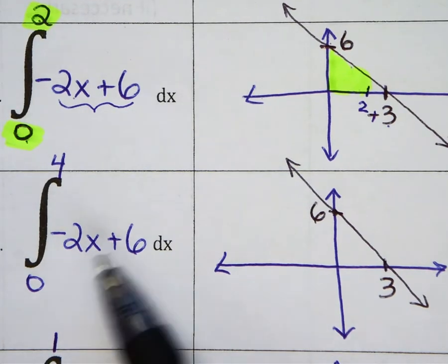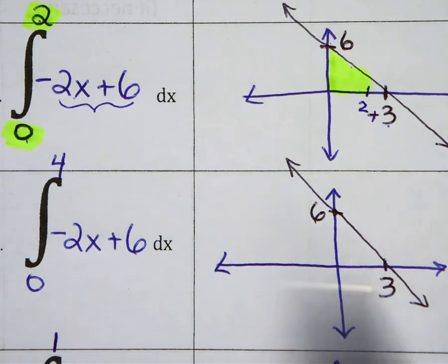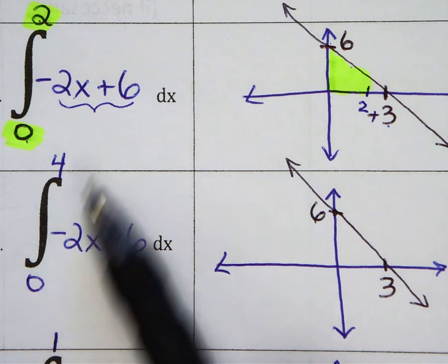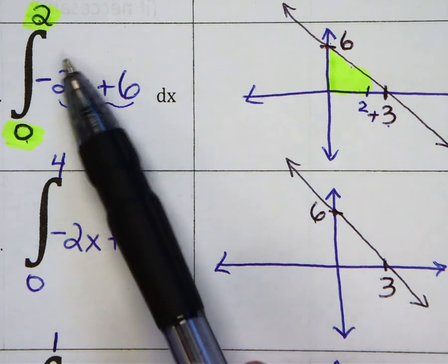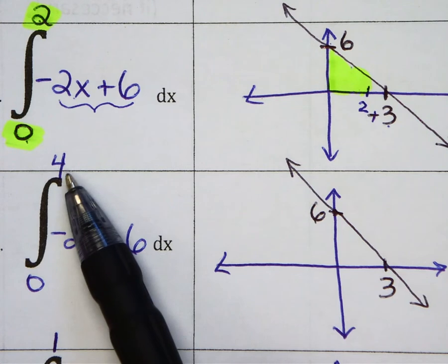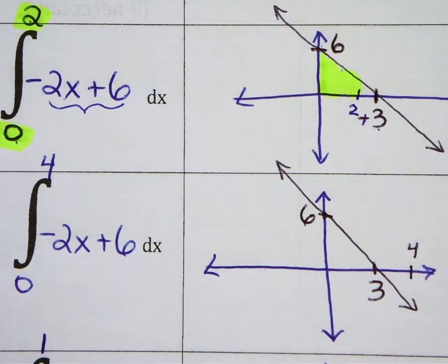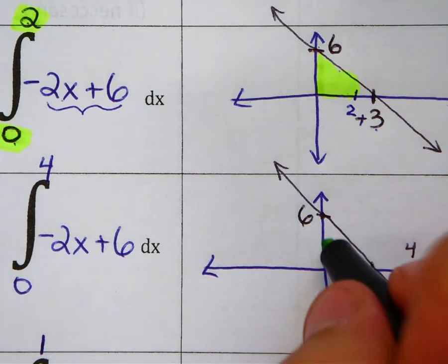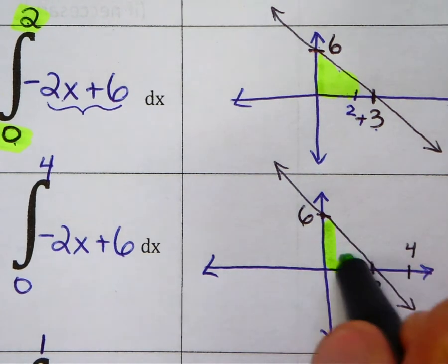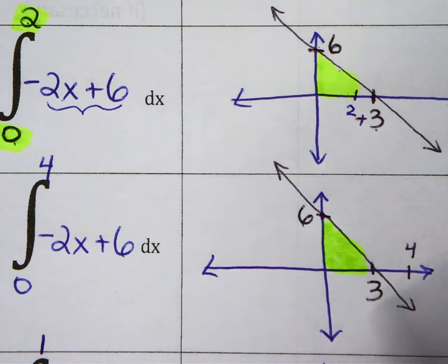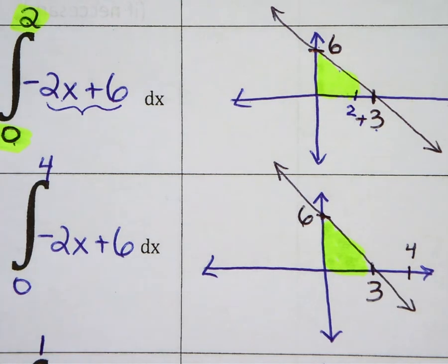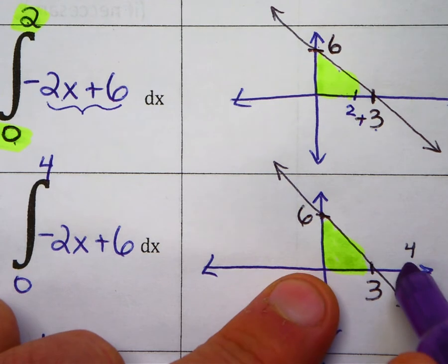Now notice I have the same exact function here and the same exact graph, but I'm calculating the area from zero to four. So I change the upper bound from a two to a four, and this is what that would look like. So I have area above, and then notice it hits an interruption point. The three, that's where the graph goes from above sea level to below sea level.